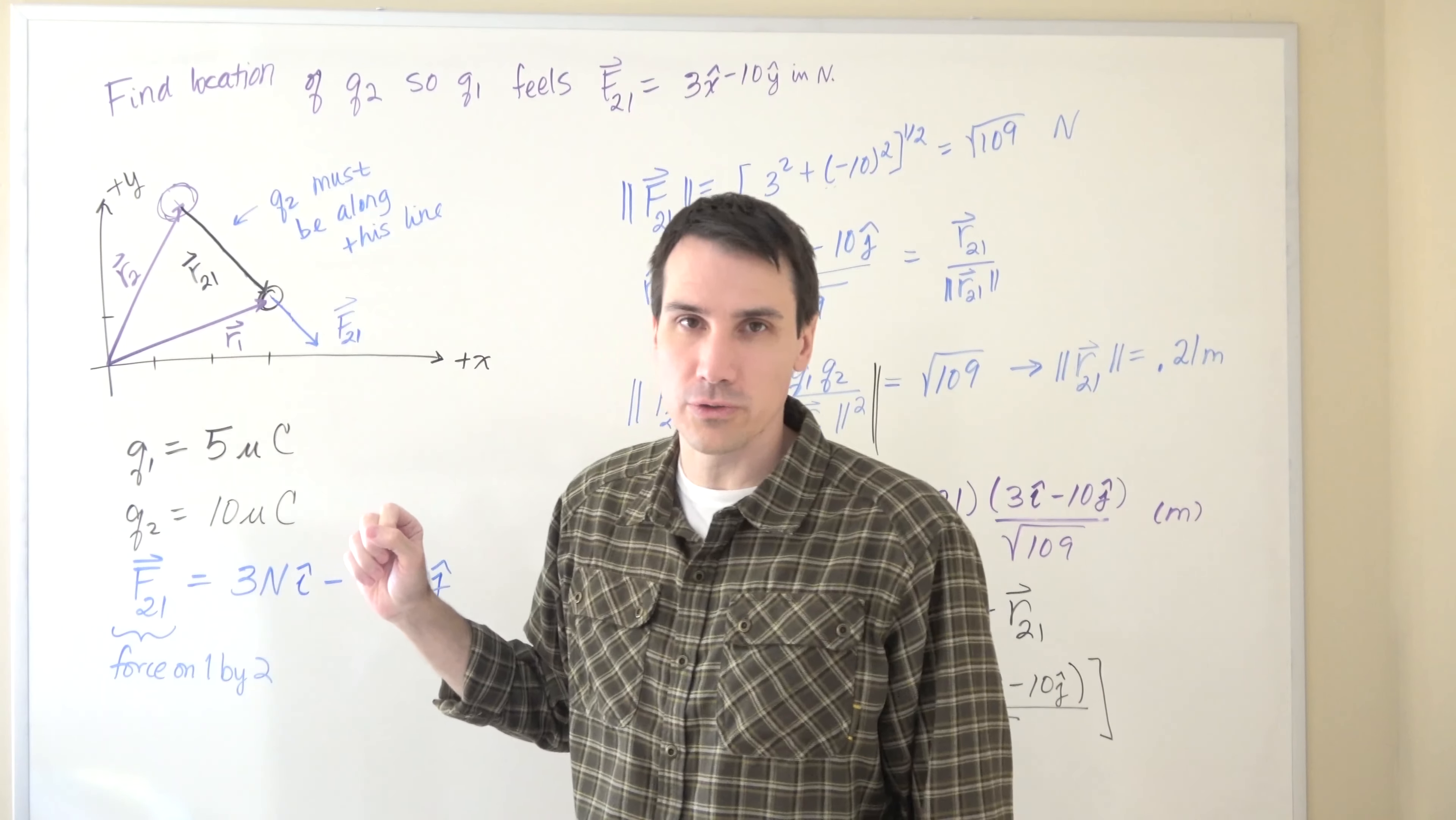Now to solve mathematically for the position of charge 2, we are going to look at this picture here. So what this picture shows is r2 is the vector that points from the origin to particle 2. r1 is the vector that points from the origin to particle 1, and r21 is the vector that points from charge 2 to charge 1.